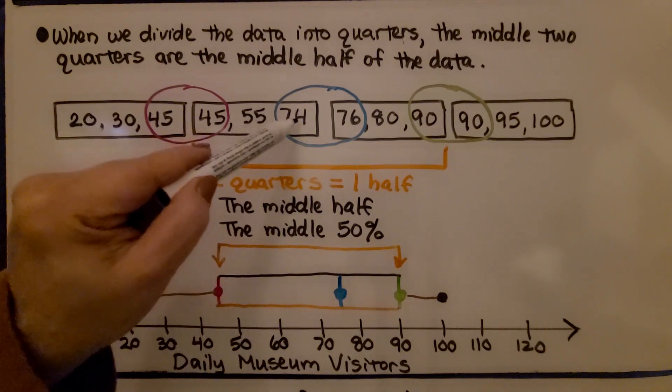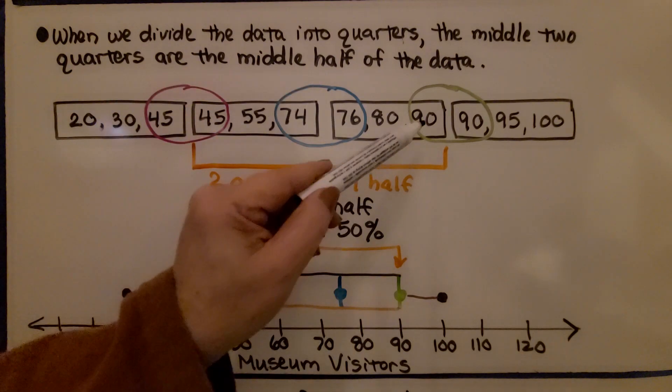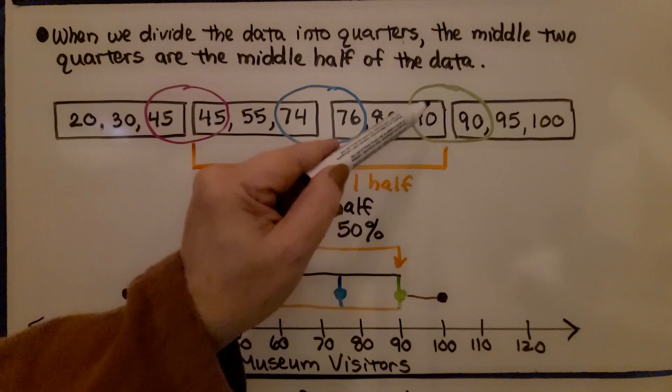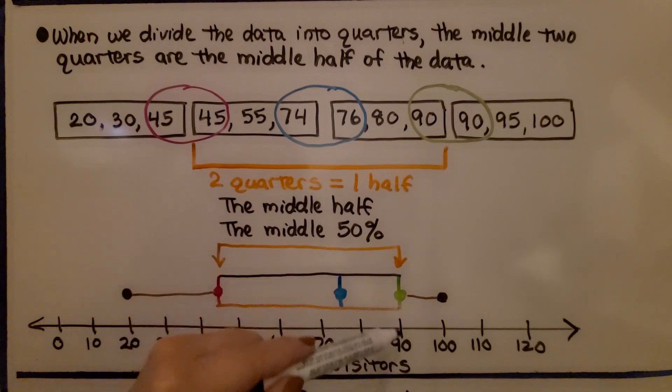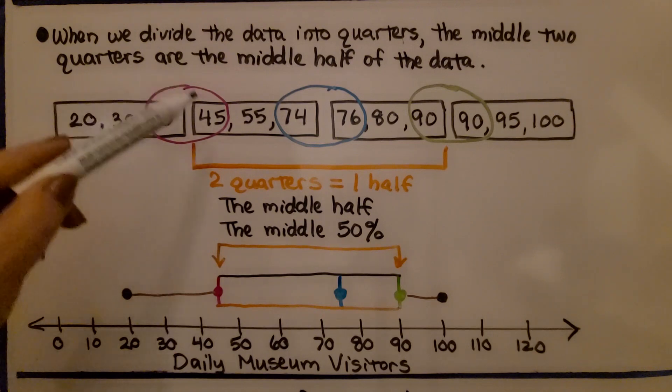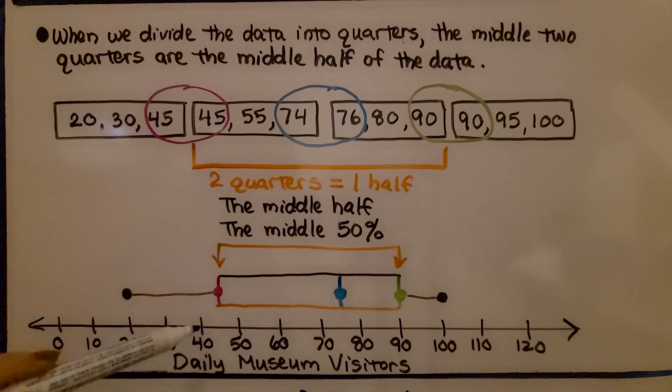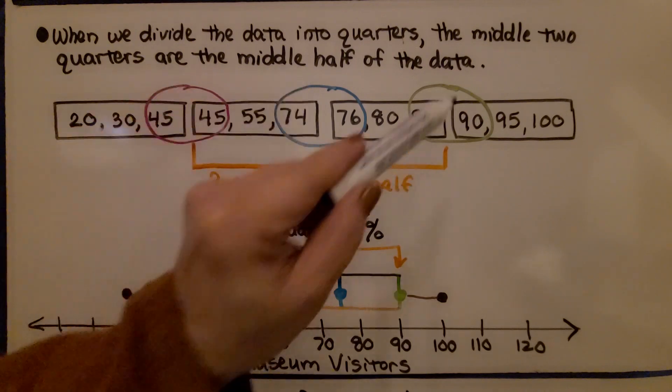For here, between 74 and 76 would be 75. And for Q3, the third quartile, we've got a 90 and 90, so that would be 90. We pick the middle number, or if there's two numbers, we average those two, and then that would be our Q1, Q2, or Q3.